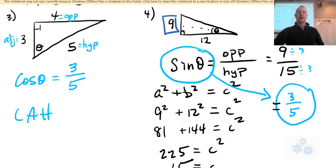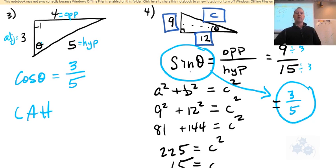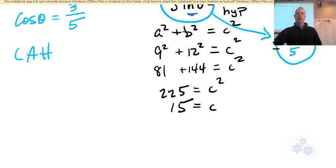A squared plus B squared equals C squared. And of course, this right here, these two are A and B, and then the hypotenuse is always C. So we had to find the hypotenuse before we could find sine for this question.